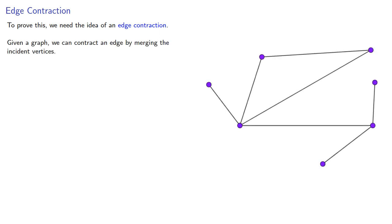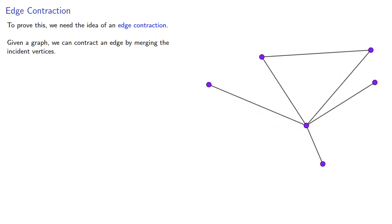To prove this, we need to introduce the idea of an edge contraction. Given a graph, we can contract an edge by merging the incident vertices.